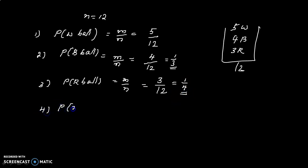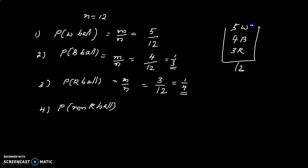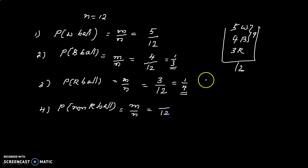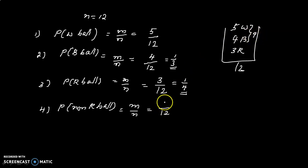What is the probability that it is a non-red ball? We select one ball from 12. The red balls are 3. The remaining 5 white and 4 black, total 9 balls, are non-red. The favorable cases m equals 9, n equals 12. So the probability of non-red is 9 by 12, which can be written as 3 by 4.